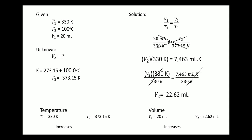Analyzing: T1 is 330 Kelvin, which increases to 373.15 Kelvin. For volume, it increased from 20 mL to 22.62 mL, also increasing.